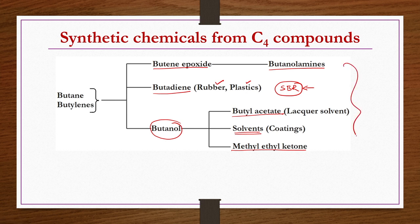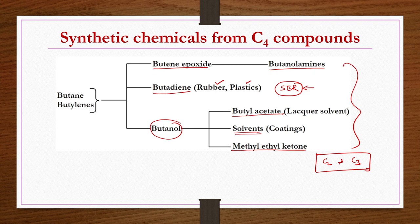Compared to the chemicals that can be produced from C2 and C3 compounds, fewer chemicals are produced from C4 compounds. That is the reason most of the importance was given to chemicals from C2 and C3 olefins — ethylene and propylene respectively. In this lecture, we will primarily discuss the production of butadiene by different processes and then conclude this chapter.